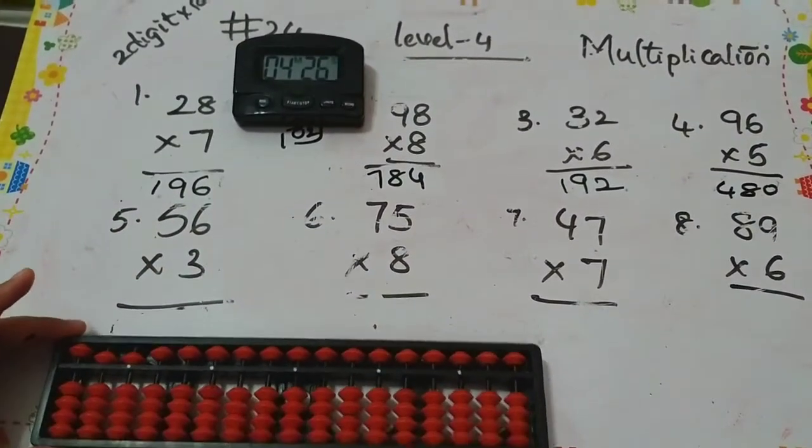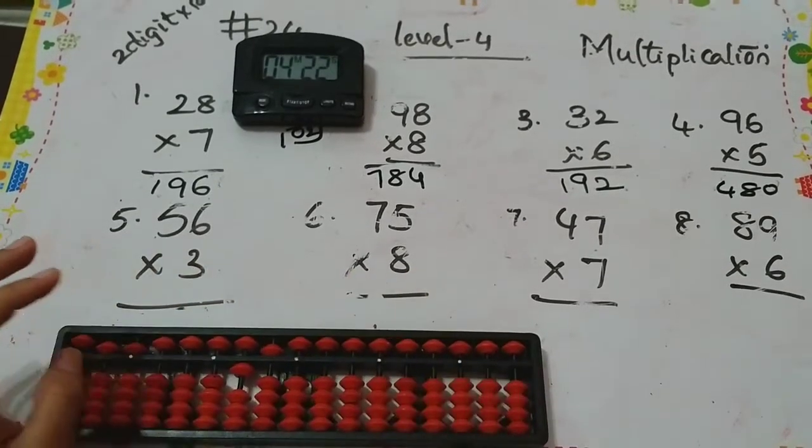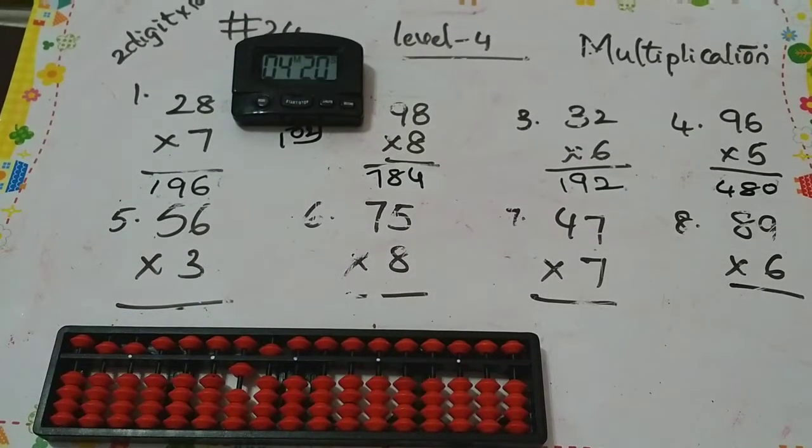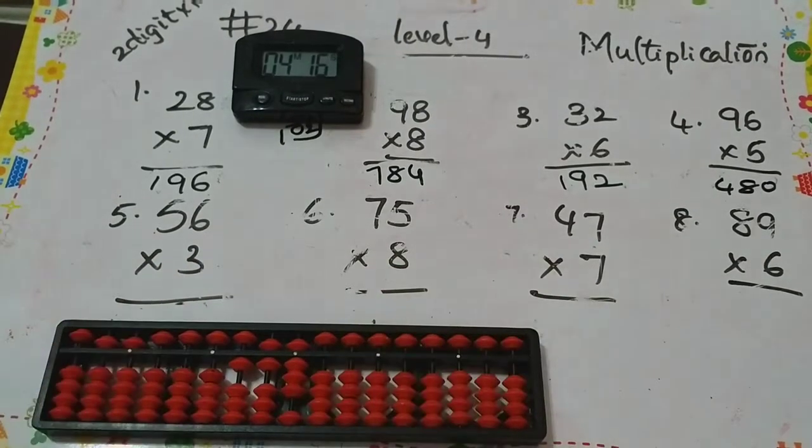Next one: 5 threes are 15, so 1, 5. 3 sixes are 18, so 1, 8. What's the answer you got? 168.